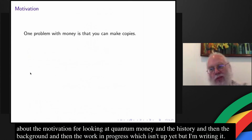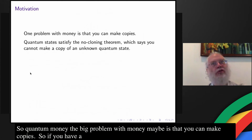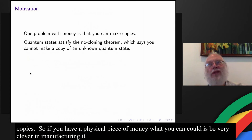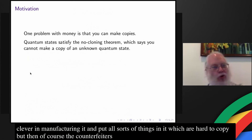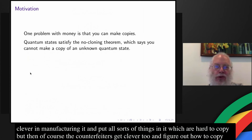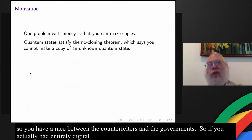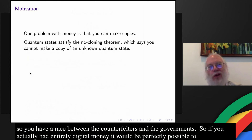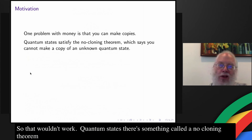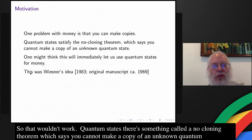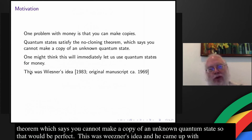So quantum money. The big problem with money is that you can make copies. If you have a physical piece of money, you can be very clever in manufacturing it and put all sorts of things in it which are hard to copy. But then the counterfeiters get clever too and figure out how to copy it. So you have a race between the counterfeiters and the governments. If you actually had entirely digital money, it would be perfectly possible to make a copy, so that wouldn't work. Now, quantum states — there's something called a no-cloning theorem, which says you cannot make a copy of an unknown quantum state, so it seems those would be perfect for money. This was Wiesner's idea. He came up with the idea in 1969 and wrote the manuscript, and it took 14 years to get it published.